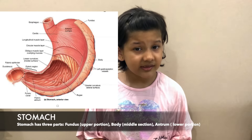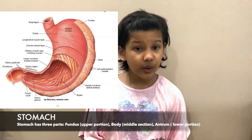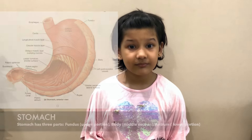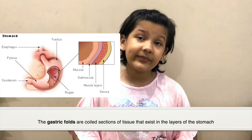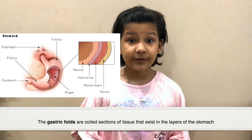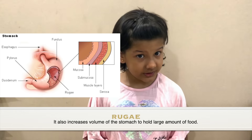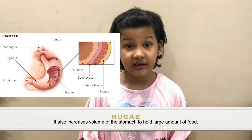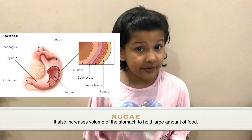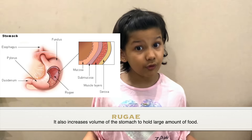Our stomach is divided into three parts: the upper one is the fundus, the middle one is the body, and the lower one is the antrum. There are also folds in the stomach known as rugae. These rugae produce enzymes — one is pepsin that digests proteins, and the other is hydrochloric acid that fights bacteria. The rugae also increases the surface area for more digestion.